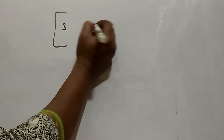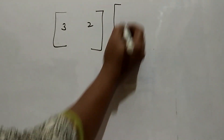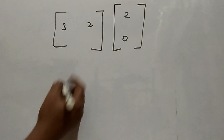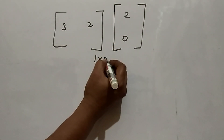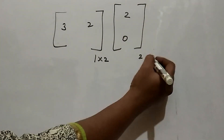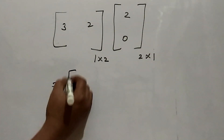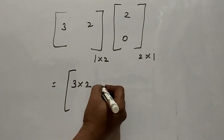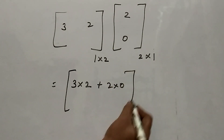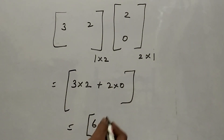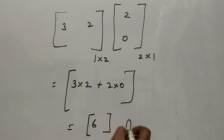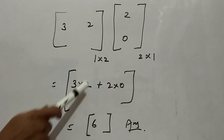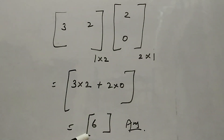Next example: matrix [3, 2] multiplied by [2; 0]. First matrix is 1 row and 2 columns; second is 2 rows and 1 column. So multiply: 3×2 + 2×0 = 6 + 0 = 6. Answer is a 1 by 1 matrix: [6].